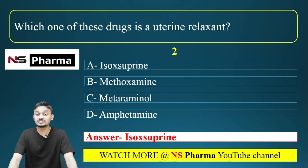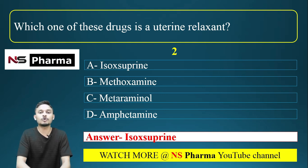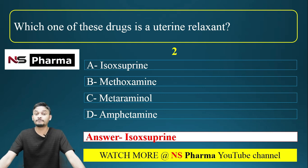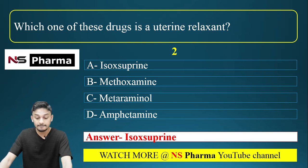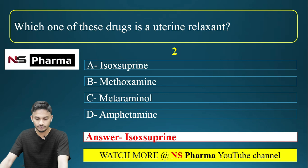Uterine relaxants are also called tocolytics — 'toco' means childbirth and 'lytic' means to terminate, so tocolytics refer to termination or prevention of childbirth. Isosuprine can be used to delay labor or stop premature labor. Isosuprine is a beta-2 receptor agonist.